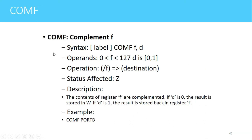COMF complements the contents of a file register. The syntax is COMF f,d — f is any file register or RAM location, d is the destination. The contents of the file register are bitwise complemented and stored in the destination. For example, COMF PORTB complements the contents of PORTB. Since no destination bit is written, it defaults to 1, meaning the result is stored back in PORTB.